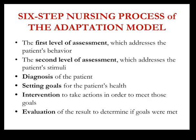There are six steps in the nursing process according to the adaptation model. First, the first level of assessment addresses the patient's behavior. Second, the second level of assessment addresses the patient's stimuli — assessing focal, contextual, and residual stimuli. Third, diagnosing the patient based on the assessment. Fourth, setting goals for the patient's health. Fifth, interventions to take actions in order to meet those goals. Sixth, evaluation of the result to determine if goals were met.